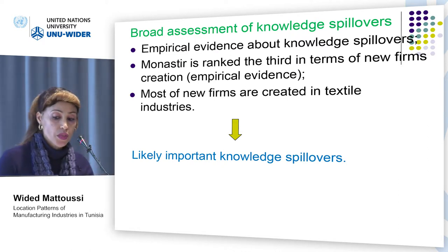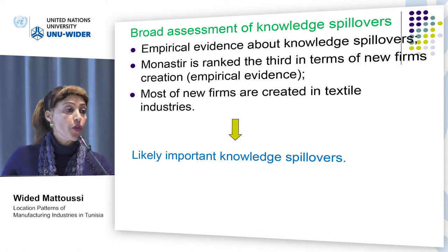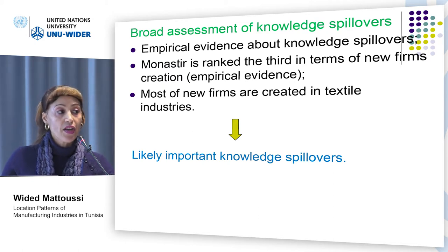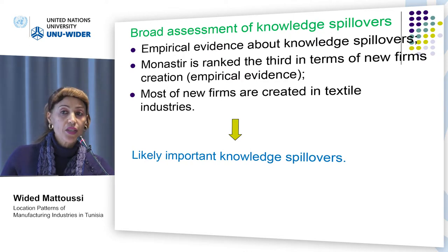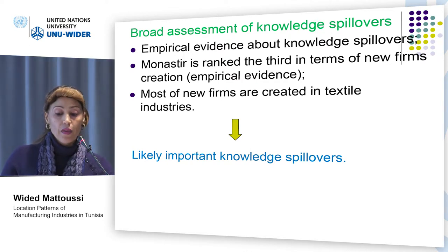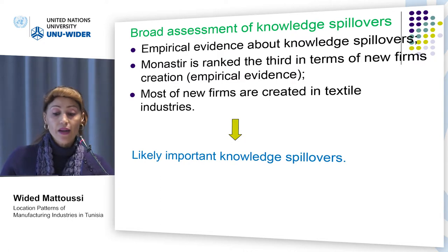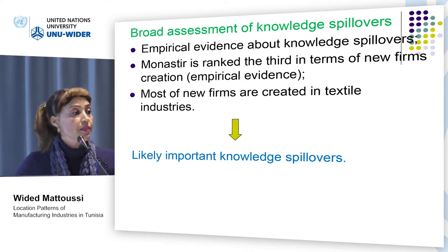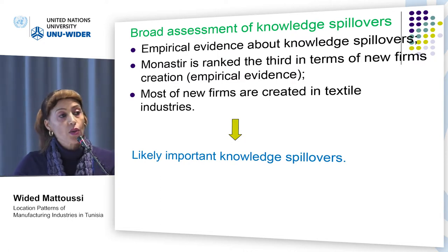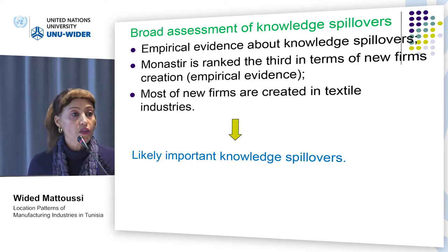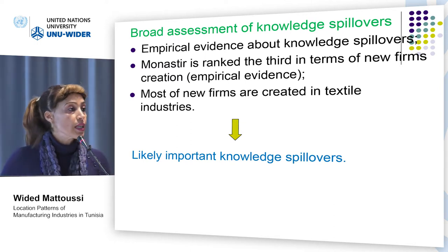Moreover, based on Ayedi and Matusi, who found that 11 percent of new firms are created in Monastir, ranked third after the two central business districts Tunis and Sfax, and moreover most new firms created at the national level are in the textile sector, this may suggest the likely importance of knowledge spillovers for these industries.